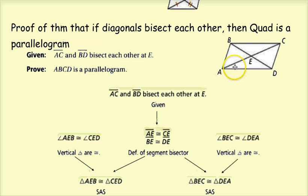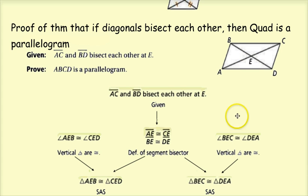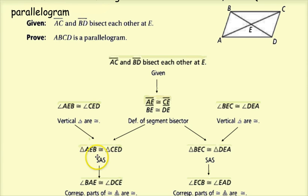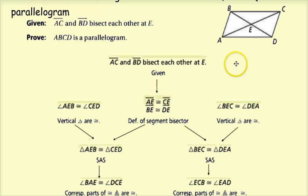I also have vertical angles: angle AEB and angle CED (the left and right), and angle BEC and angle DEA (the top and bottom). Using those, I can prove triangle AEB is congruent to triangle CED, and triangle BEC is congruent to triangle DEA — both by Side-Angle-Side — because I have the bisected diagonals and the vertical angles.